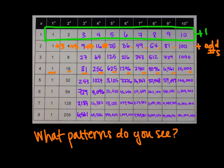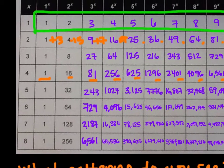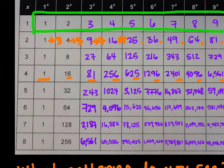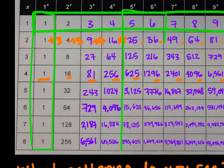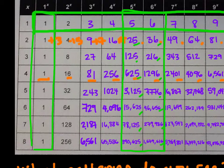Let's look column-wise, specifically at the ones place. 1 to any power is going to be 1 — that's obvious. Looking at bases 5 and 6, in the ones place I always see a 5 for base 5, and always a 6 for base 6. So anything raised to any power with a base of 5 will have a 5 in the ones place, and same for base 6.